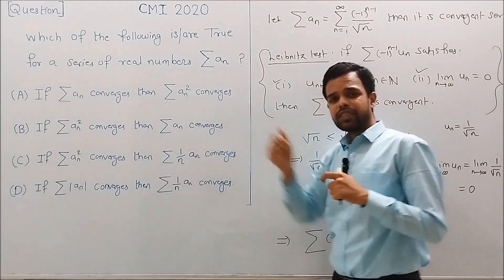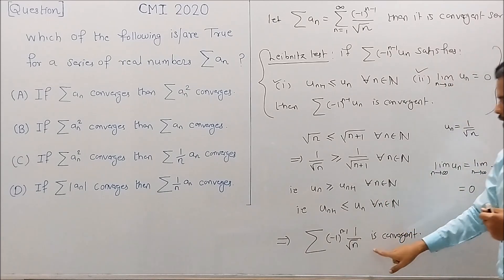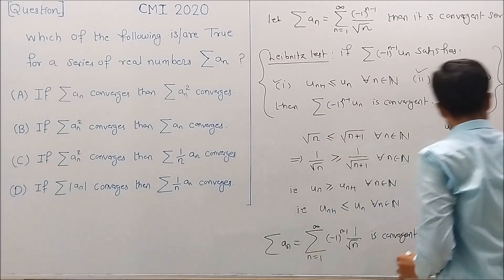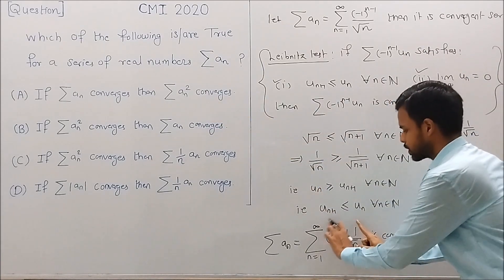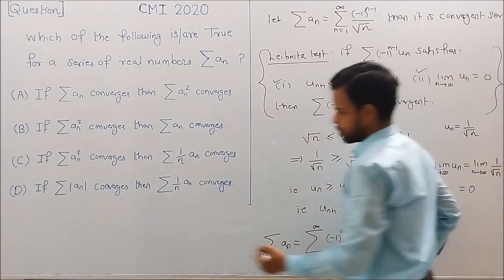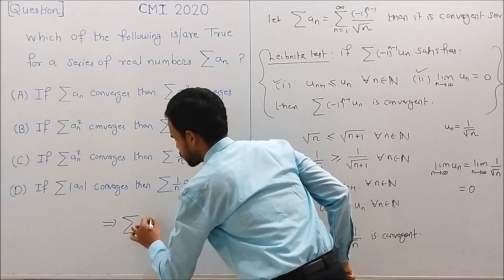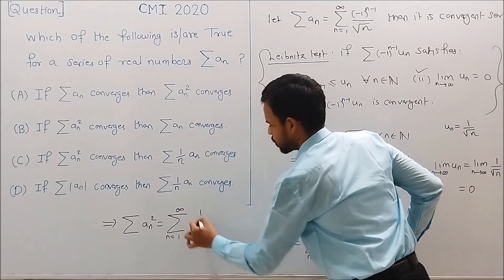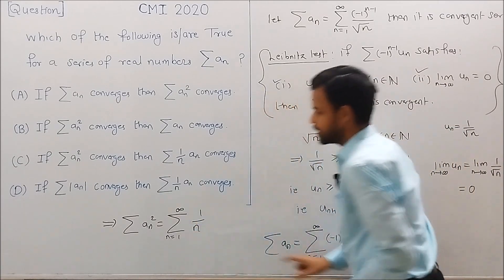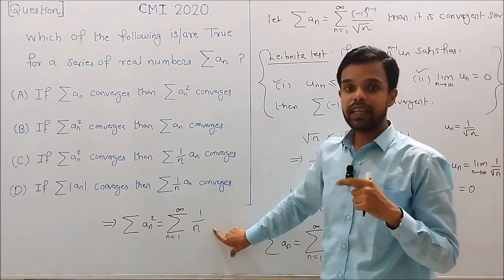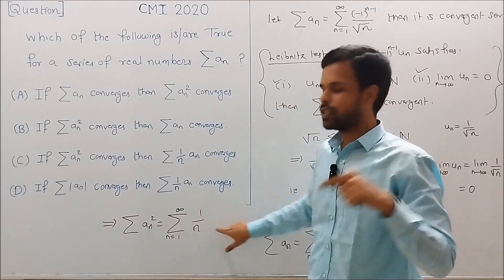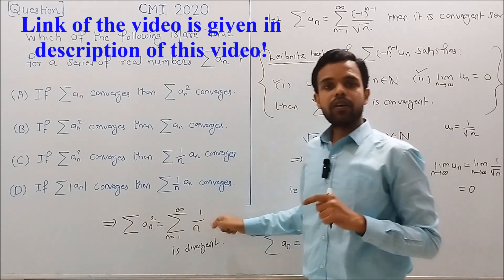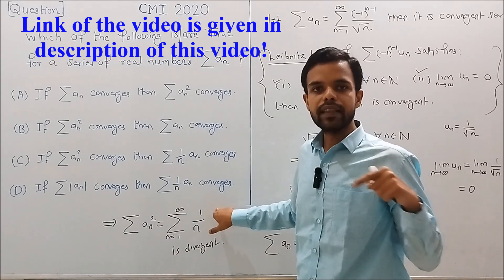Now, is series An squared convergent? Squaring each term, series An squared equals the series of 1 over n from n=1 to infinity, which is nothing but the harmonic series. We have seen in a previous video that the harmonic series is divergent. You can check the link to that video provided in the description.